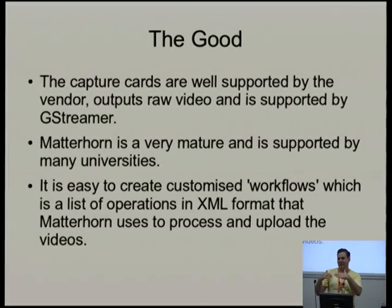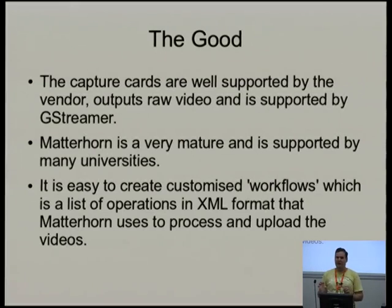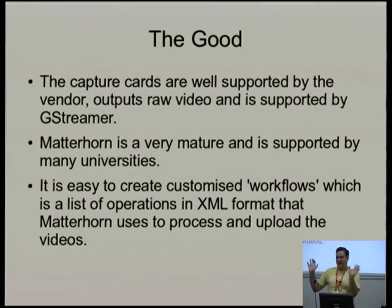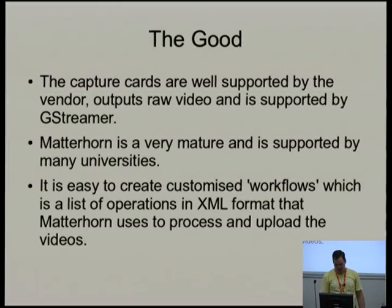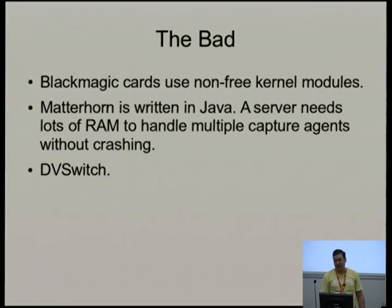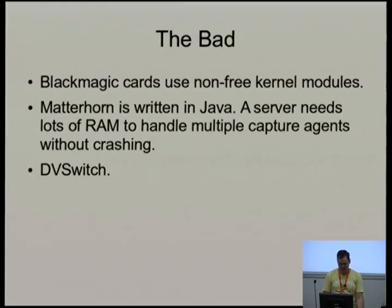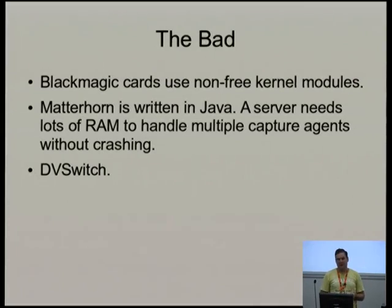When something's done, Matterhorn converts tags from one to another so the next module knows what to process. Videos don't have to go through certain processing steps if they don't have the right tags. You can encode a video for YouTube and for the built-in media module using the same workflow, producing two different videos in different formats and resolutions. The only bad thing about the Blackmagic cards is they use non-free kernel modules, like NVIDIA — but the GStreamer plugins, including Decklink source and Decklink sink, are all free and open source.